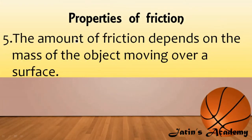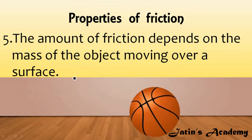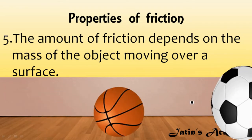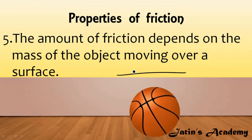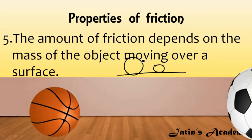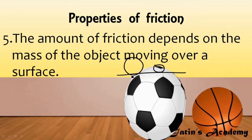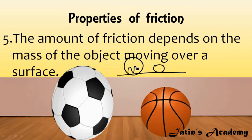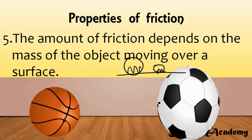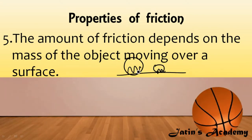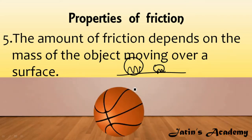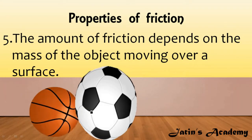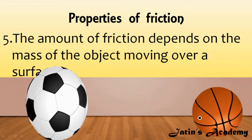Fifth property: the amount of friction depends upon the mass of the moving object. A greater-mass object experiences more friction because the interlocking between the surface and the heavier object is more. A smaller-mass object has less interlocking and therefore less friction. So in the heavier object, frictional force is more and it slows down more easily, while in the lighter object frictional force is less.